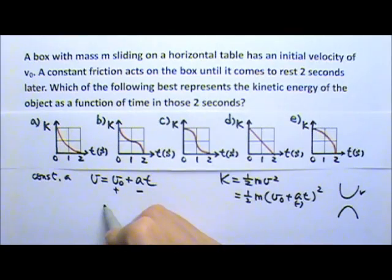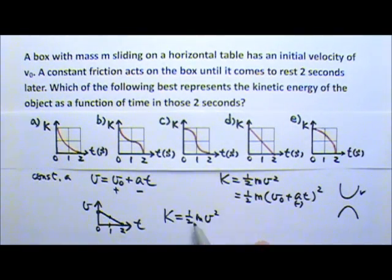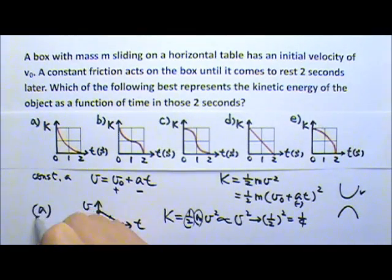Another way you can use to decide this is you can plot the velocity as a function of time. It starts at v₀ and it's a linear equation with a negative slope. So it goes down like that. At two seconds, the velocity becomes zero. That means at one second, the velocity is halved. And the kinetic energy is one-half mv squared. One-half and m are constants because it's the same box. The mass doesn't change. So kinetic energy is proportional to v squared. And at one second, if the velocity becomes halved, that means the kinetic energy has to become one-fourth. And this is the parabola that has the kinetic energy that's one-fourth of the original value at one second. So either way, you can tell that the answer is A.